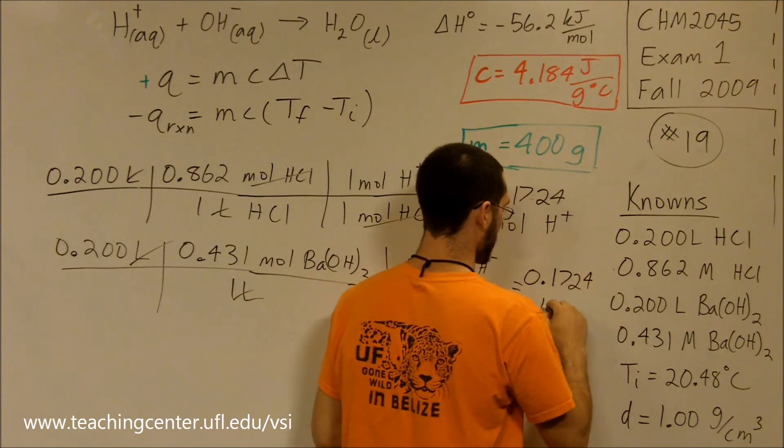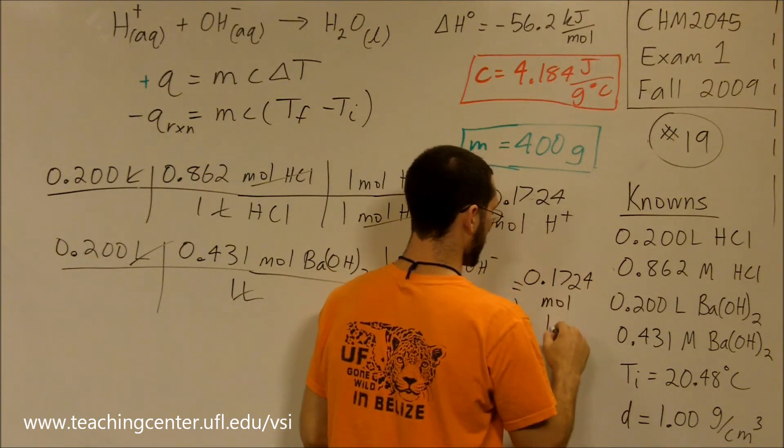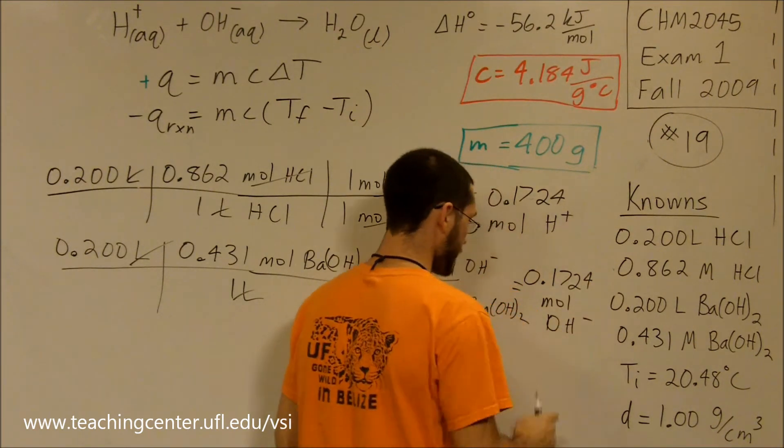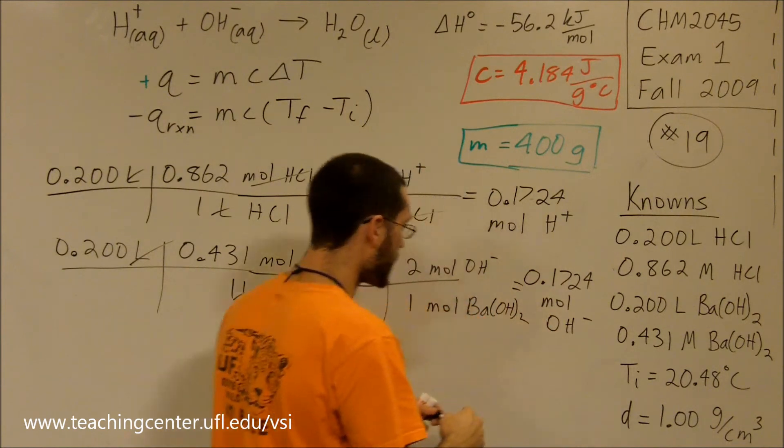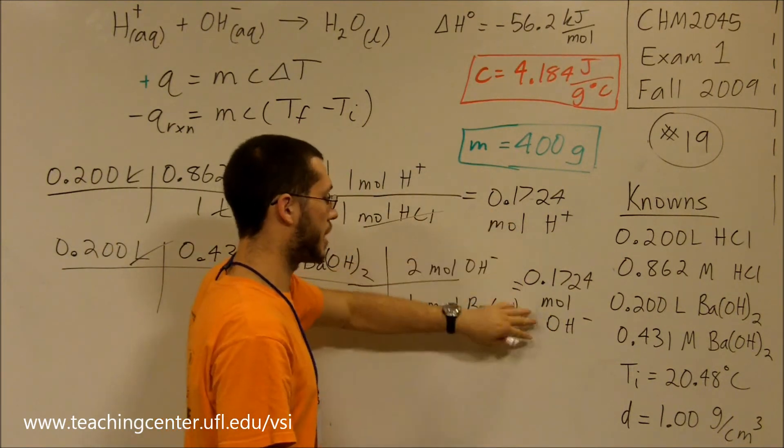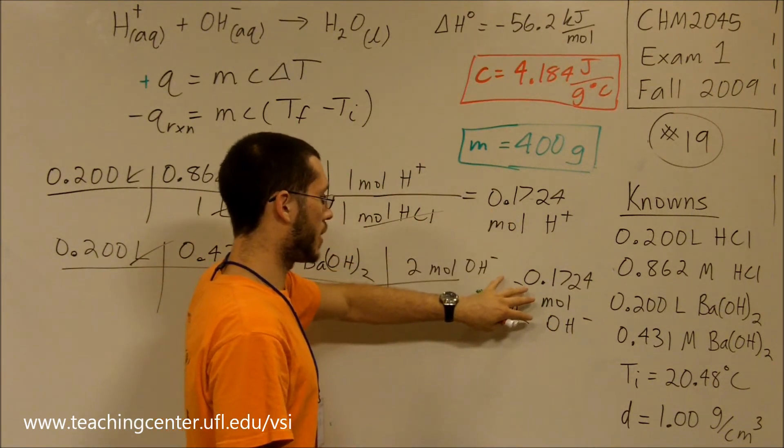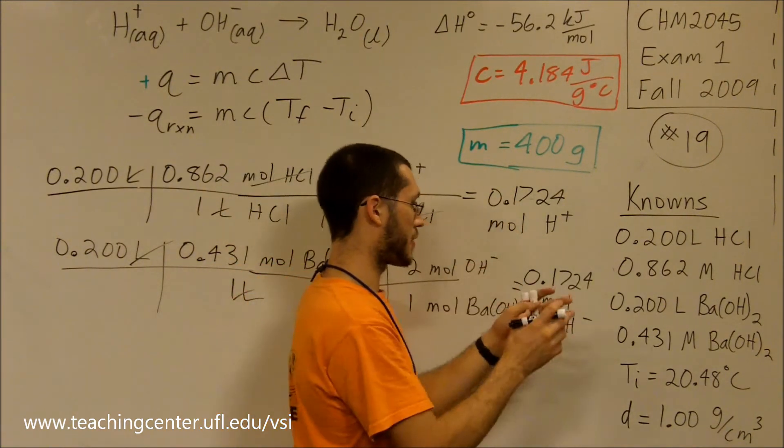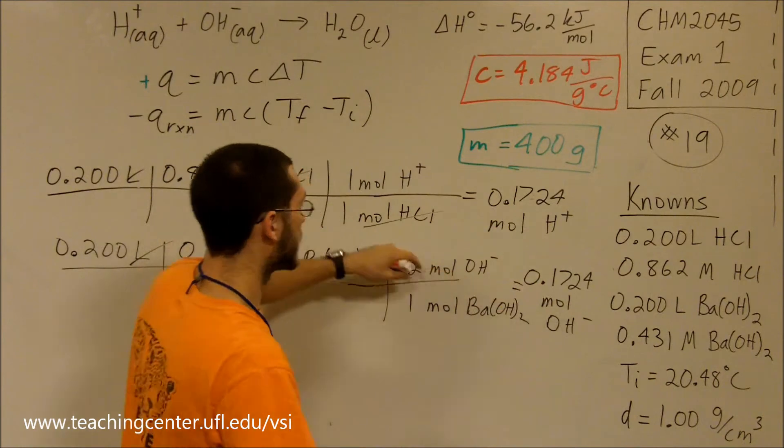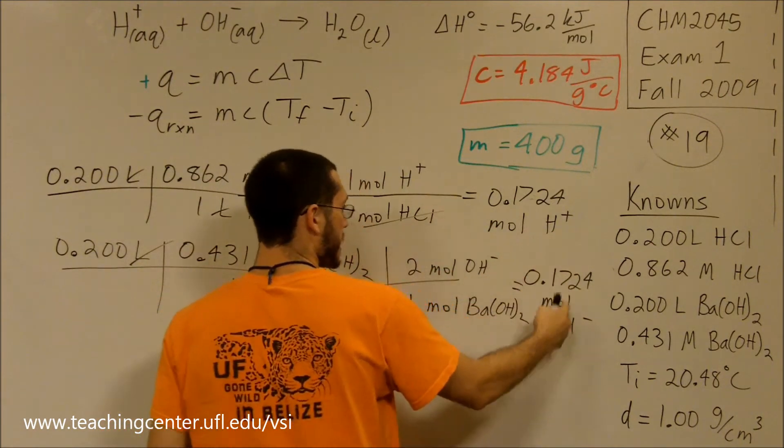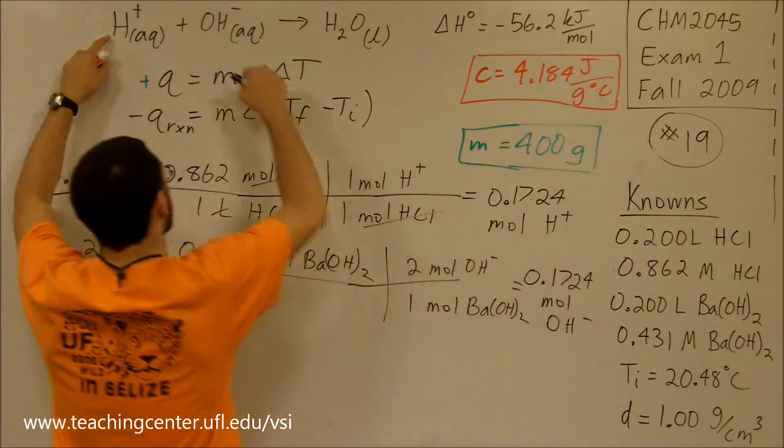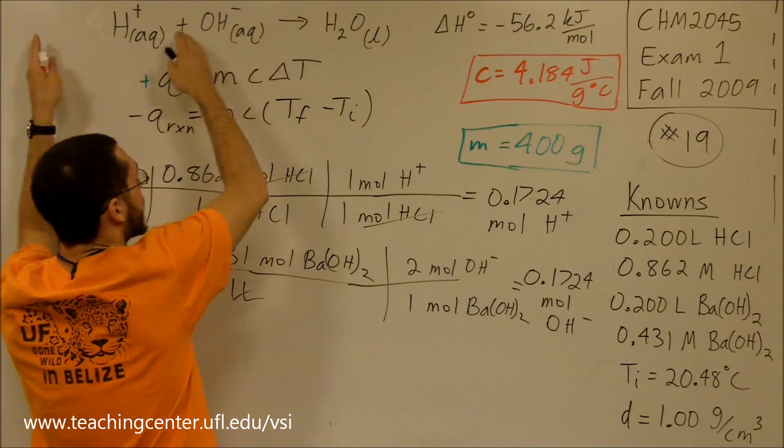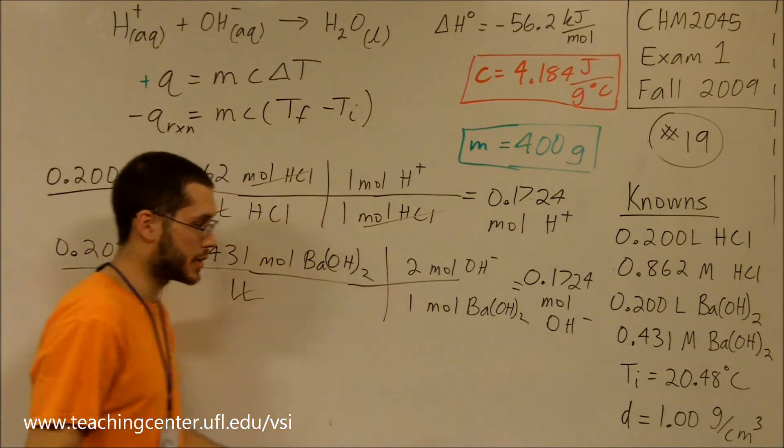It comes out to be the same thing, 0.1724 moles of OH⁻. This means that all of the barium hydroxide and all of the HCl came together, reacted perfectly together. Since the H⁺ and the OH⁻ are equal to each other and appear in a one-to-one ratio, all of them go away, convert to H₂O.